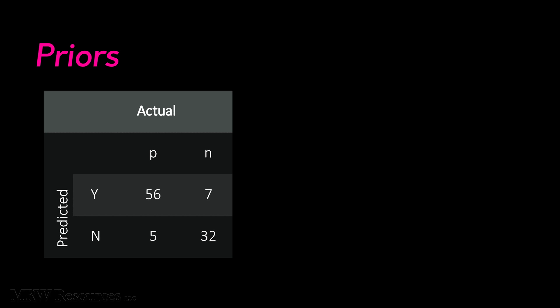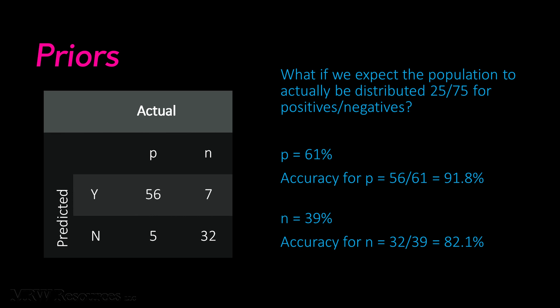Now, what if we actually expect the distribution of the full population to be 75% negative and only 25% positive? This is where a concept called priors comes in. From our confusion matrix, we can calculate the accuracy of each class separately. We saw those just a minute ago as true positives, false negatives, true negatives, and false positives. In our model, the positive class was predicted correctly 91.8% of the time by our data mining model, leaving 8.2% that were false negatives. Similarly, negatives were predicted correctly 82.1% of the time by our new model, leaving 17.9% false positives.